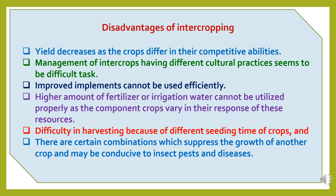In addition to advantages, there are some disadvantages of intercropping. Yield decreases if crops differ in their competitive abilities — if crops having intercompetition are selected, they will suppress each other and there will be a decrease in yield. Management of intercrops having different cultural practices seems to be a difficult task, and improved implements cannot be used efficiently because different crops require different management. Higher amounts of fertilizer or irrigation water cannot be utilized properly, as component crops vary in their response to these resources.